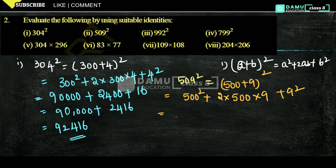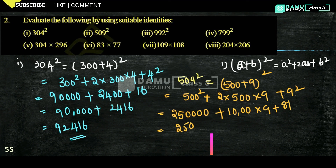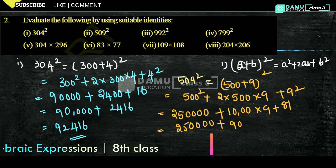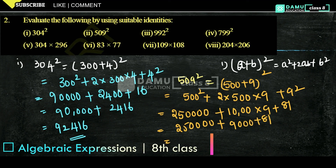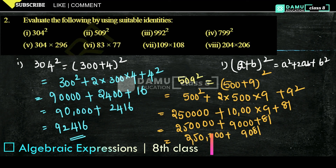500² means 5 times 5 is 25 with 4 zeros, giving 250,000. Then 2 times 500 is 1,000 times 9 gives 9,000. And 9² is 81. So 250,000 plus 9,000 plus 81 equals 259,081. That is the answer for 509².